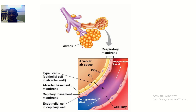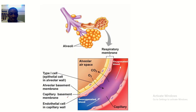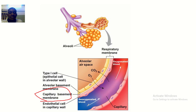Surfactant is on the surface of the alveoli. The alveolar cell plasma membrane is the membrane of the alveoli. Then we have the capillary endothelial basement membrane — this is the capillary basement membrane, essentially the contact point between the blood vessel and the alveoli.